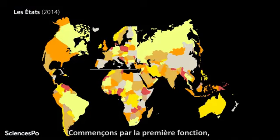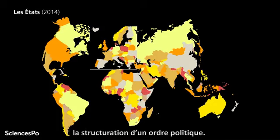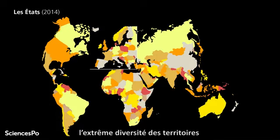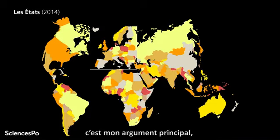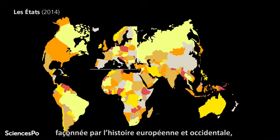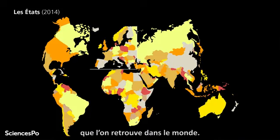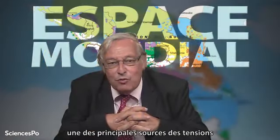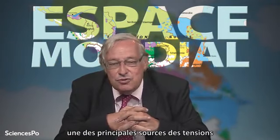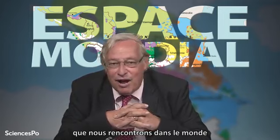Let's start by the first function, that's to say shaping and structuring a political order. We have then to take into account the extreme diversity of territories. And the main argument is that our territorial vision, which was shaped by the European and Western history, doesn't fit to all the histories around the world. This is probably one of the main origins of the tensions we can observe around the world.